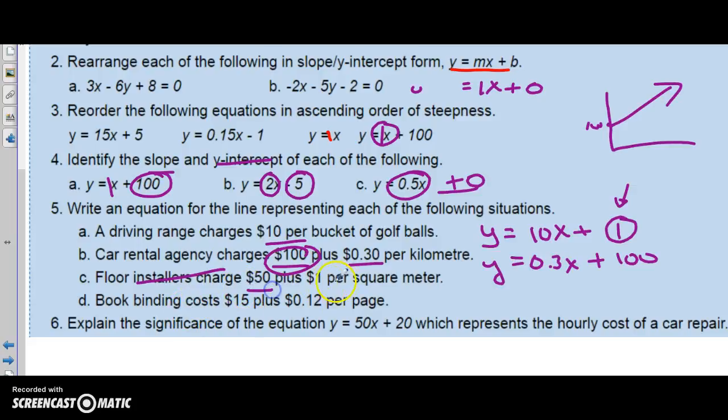Floor installers charge $50 plus $1 per, per. You're looking for per. That is going to be your slope. $50 to get in, $50 to come to your house, which makes sense. They charge you a flat rate. The plumber does the same thing. They charge you maybe $50 to come over and then whatever per hour. And this is the same thing. Floor installers cost $50 just to show up to your house. And then as they start putting in the floor, they charge you $1 per square meter. So X would, in this case, would be the number of square meters installed. $15 to show up, and the variable rate is 0.12 times X.